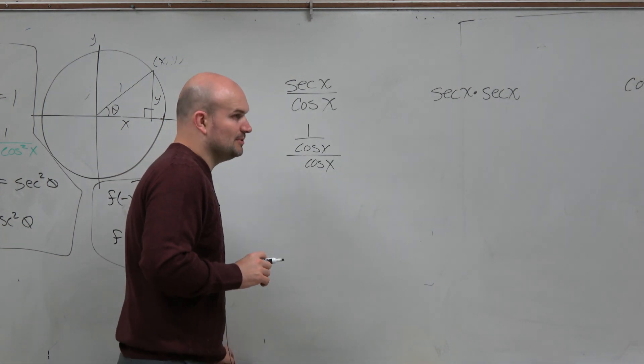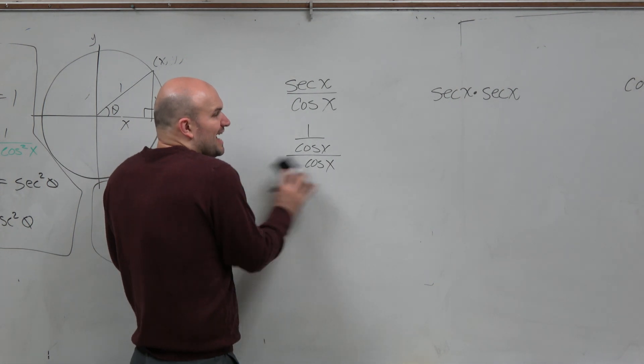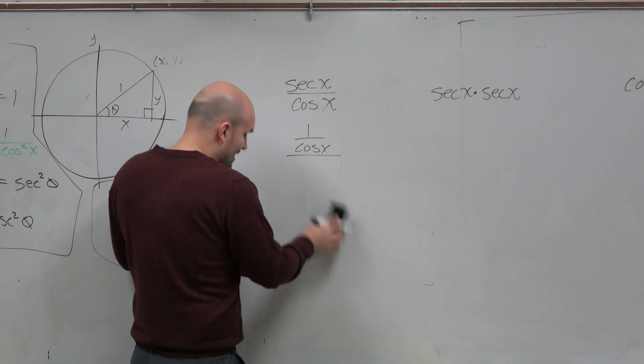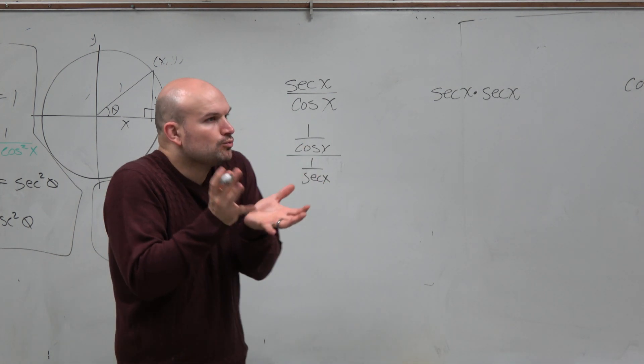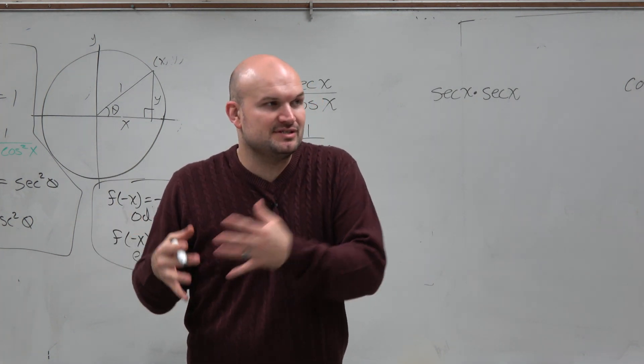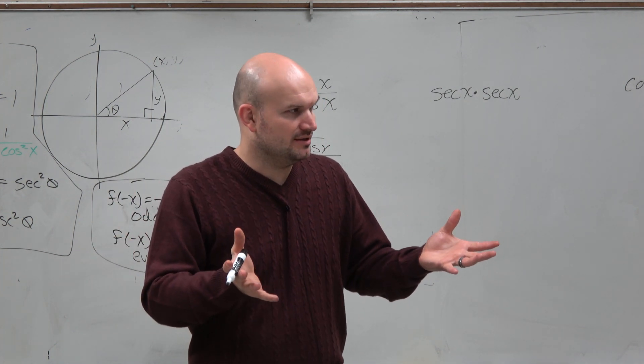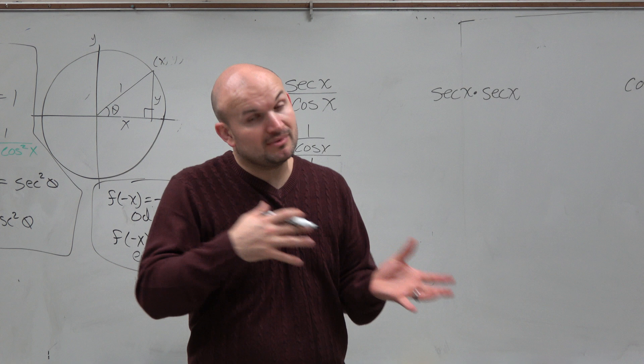Now, the trick that a lot of students get troubled in is they always want to convert everything. They always want to say, well, I got to convert cosine to 1 over secant. But again, guys, there's no rule that you have to, every single time you see a function, you have to convert it. Some of them you might want to, some of them you don't want to.